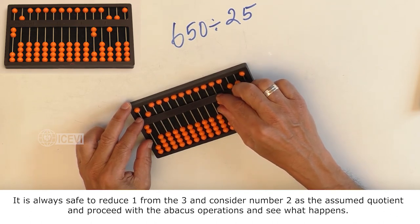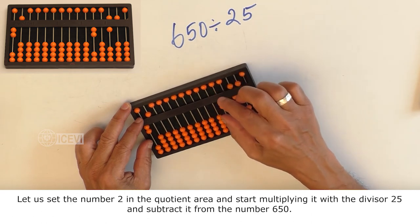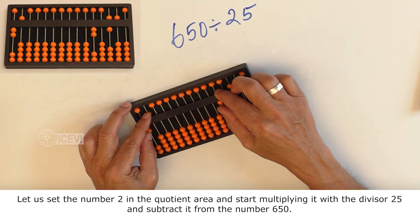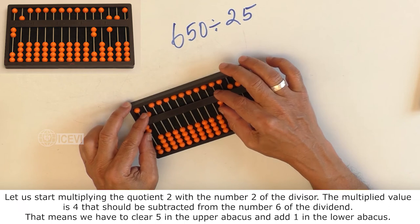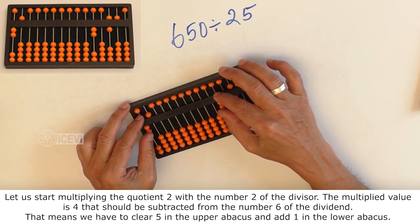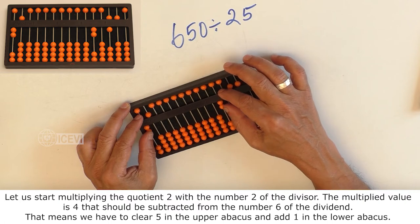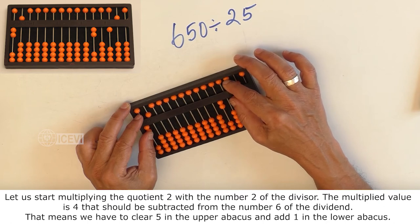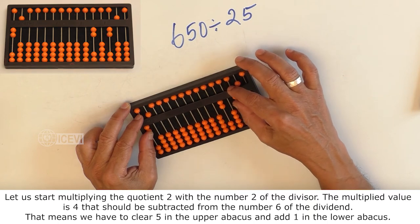Let us set the number 2 in the quotient area and start multiplying it with the divisor 25 and subtract it from the number 650. Let us start multiplying the quotient 2 with the number 2 of the divisor. The multiplied value is 4 that should be subtracted from the number 6 of the dividend. That means we have to clear 5 in the upper abacus and add 1 in the lower abacus.